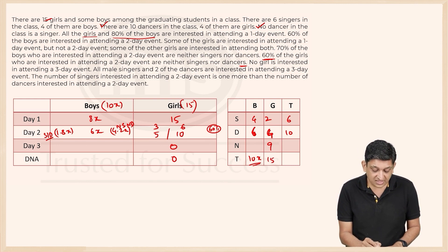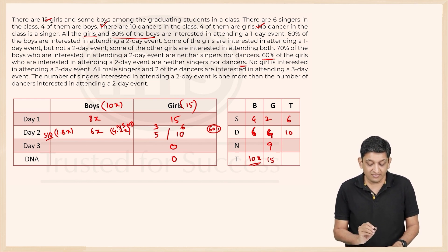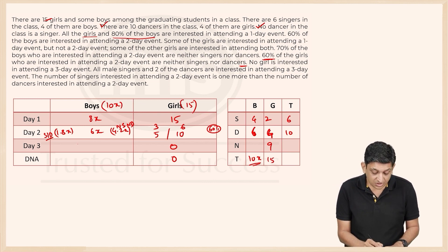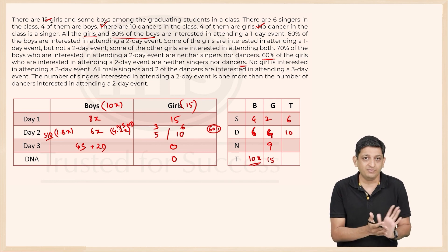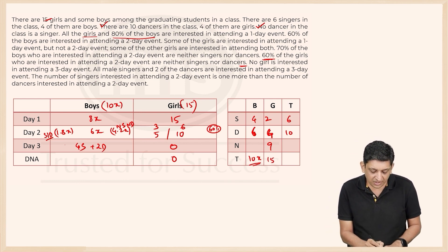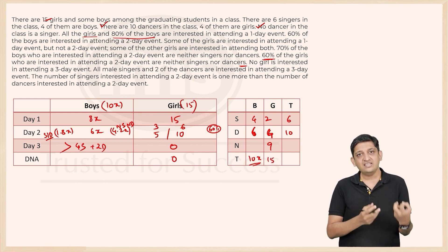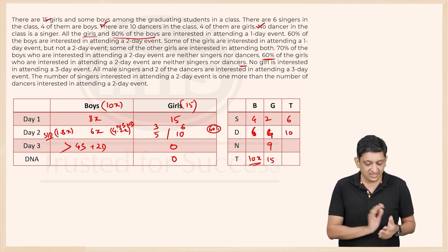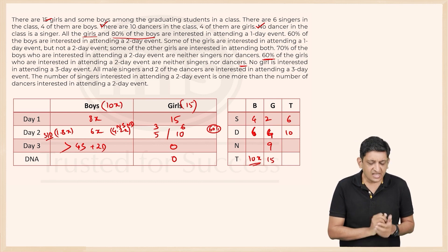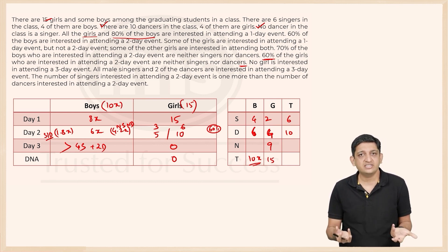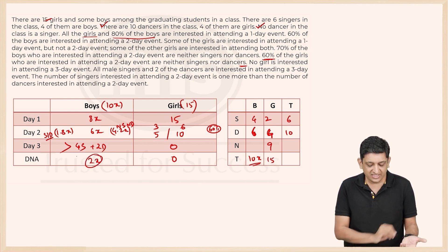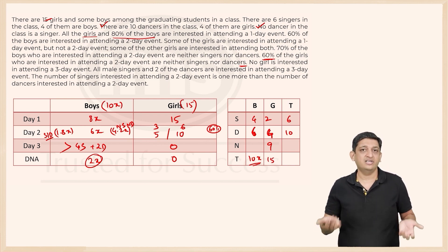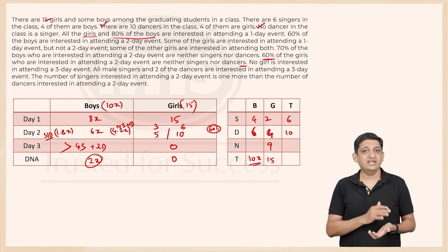For boys, all 4 male singers and 2 of the male dancers are interested in attending the three-day event. The number attending the three-day event is at least those 4 singers plus 2 dancers. Since 8x boys are interested in at least a one-day event, 2x boys are not interested in attending at all.